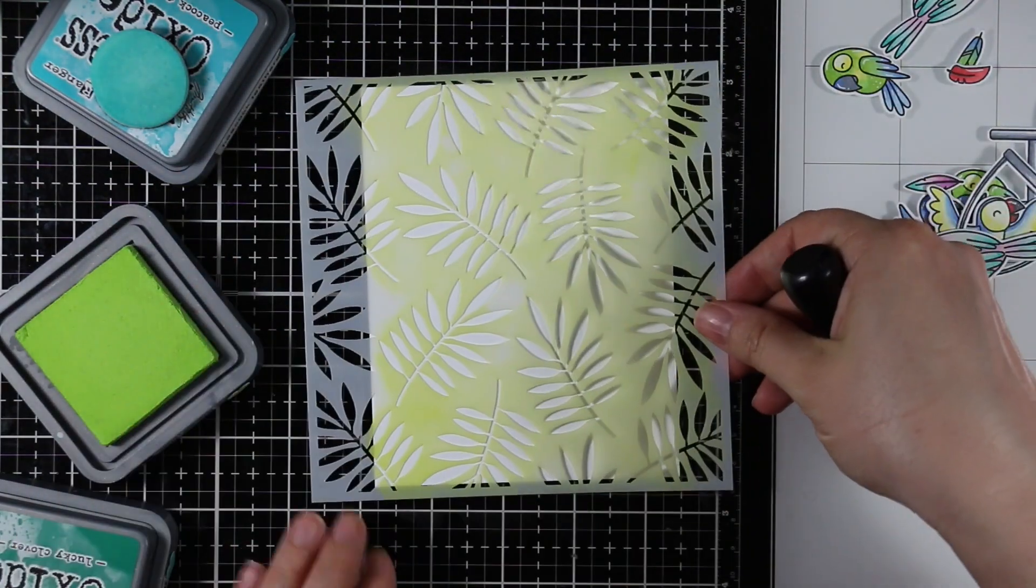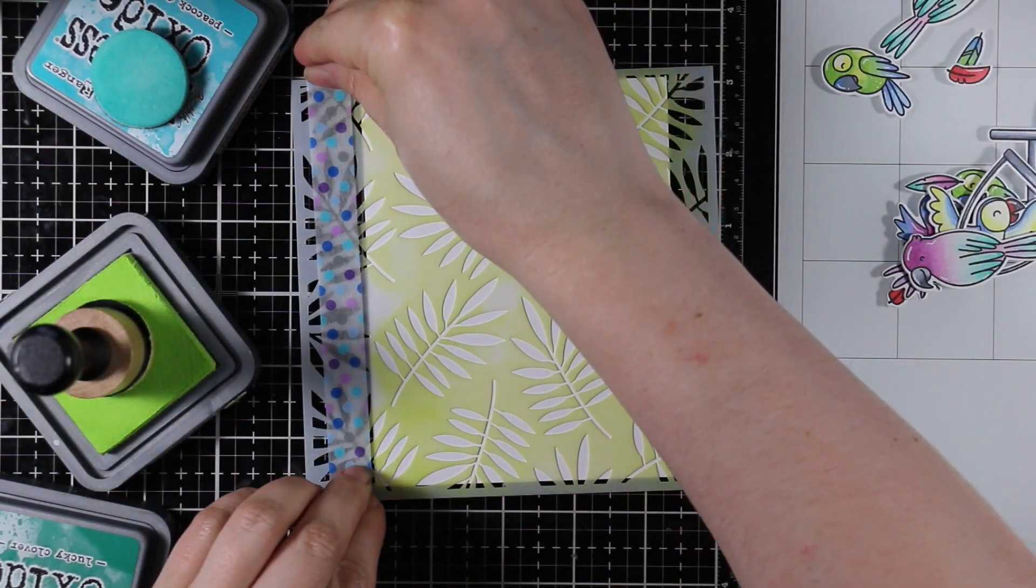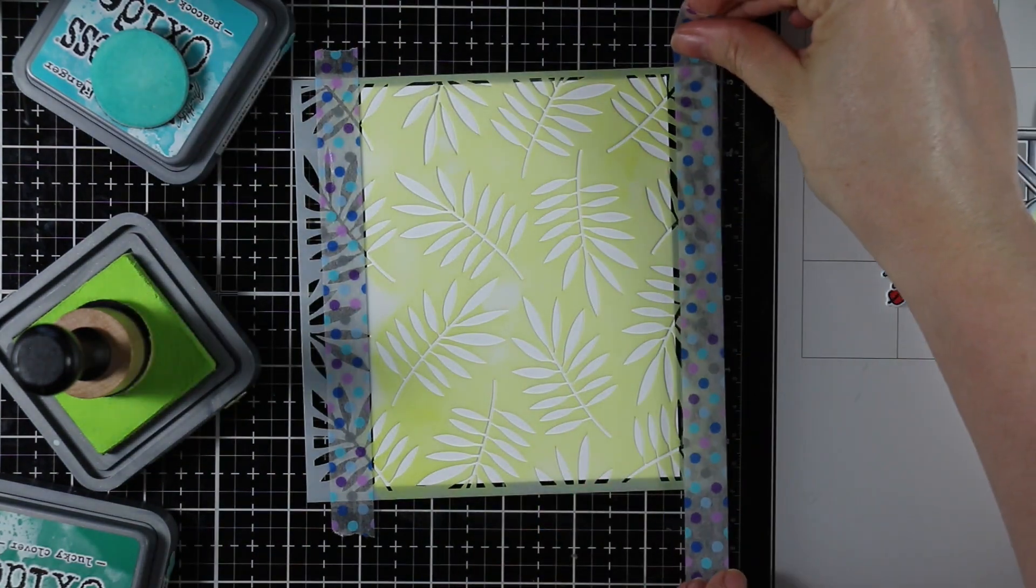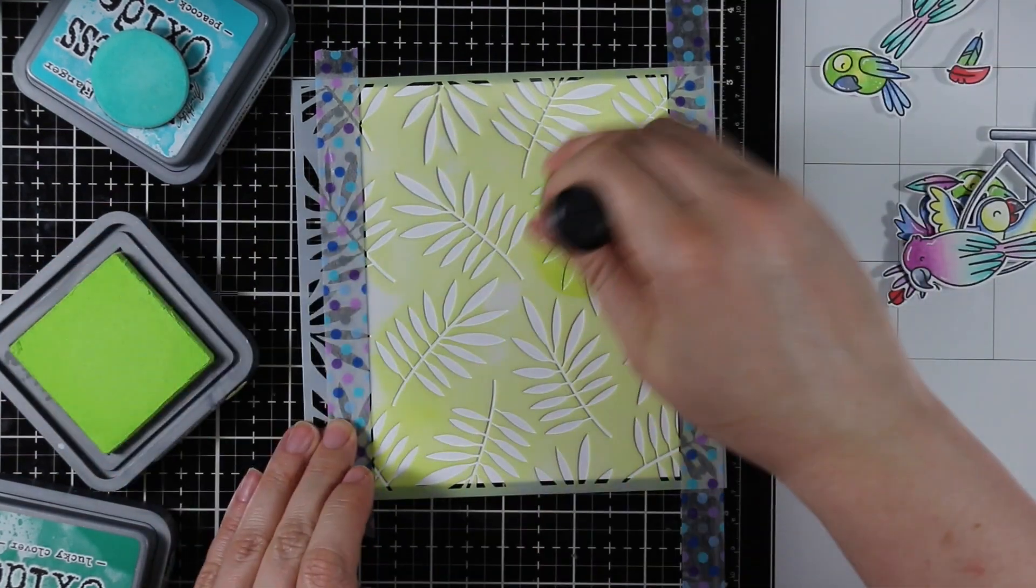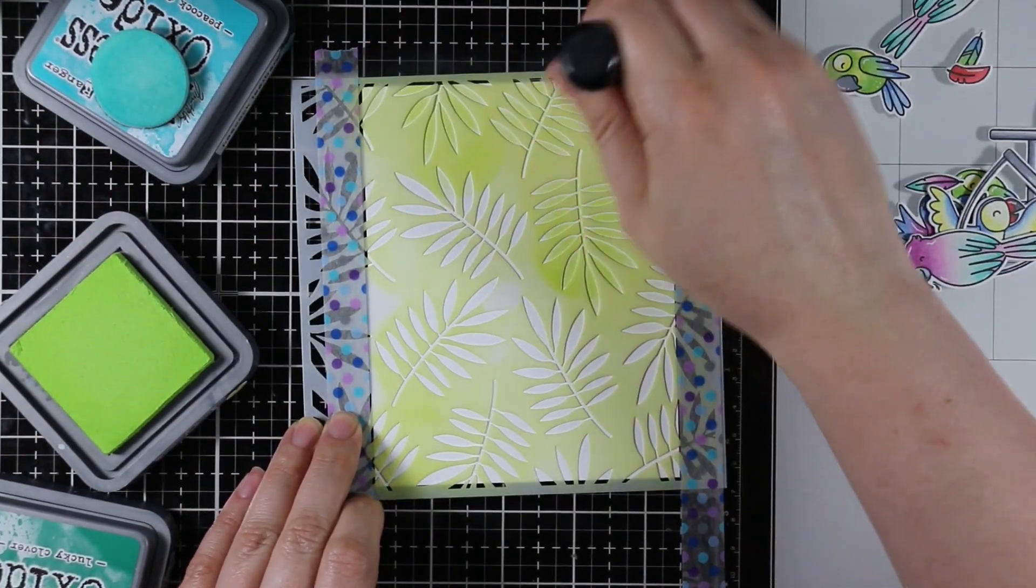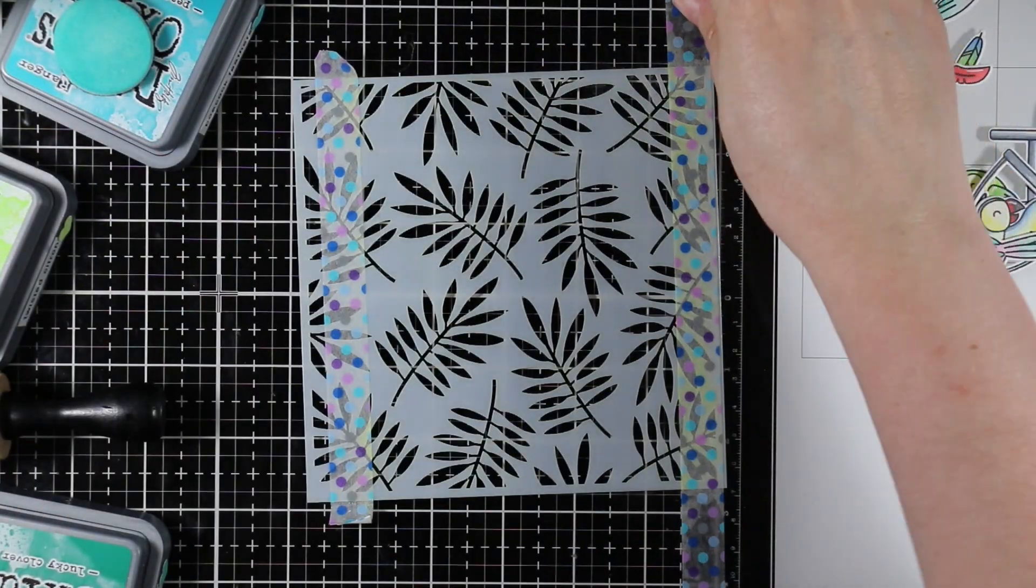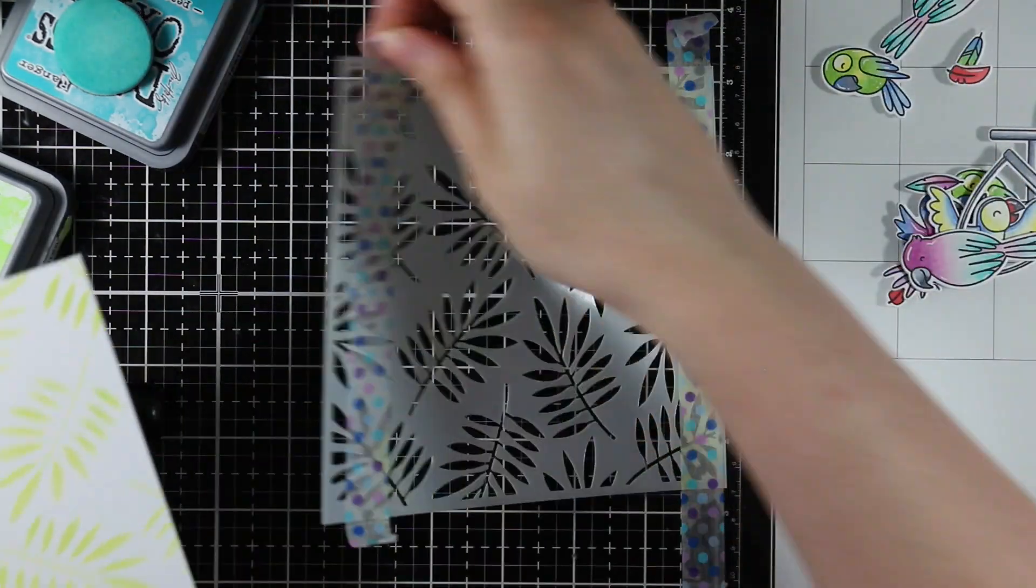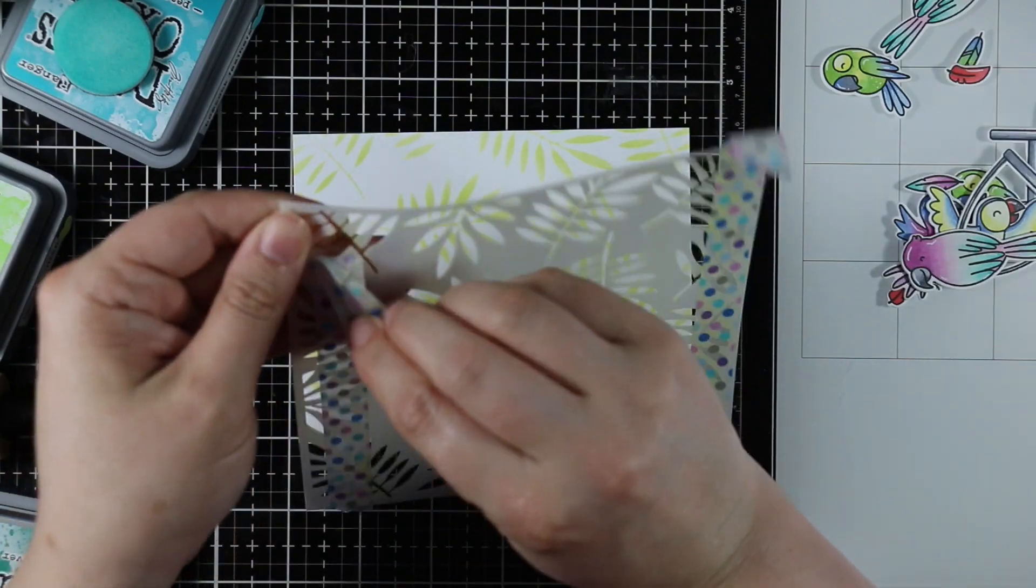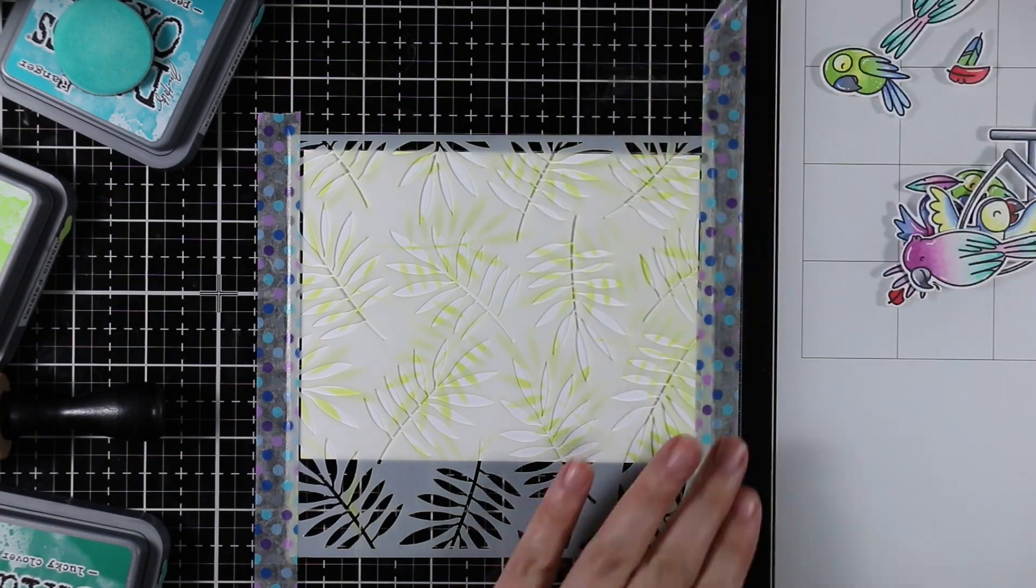This time this is the Neenah 110 pound because I'm really liking how it takes distress inks and distress oxide inks. I am using the Unbelievable stencil from Heffy Doodle. I started off originally just using like one color on this stencil, this first color I'm using is the Twisted Citron oxide ink and I'm just sponging it over the stencil.